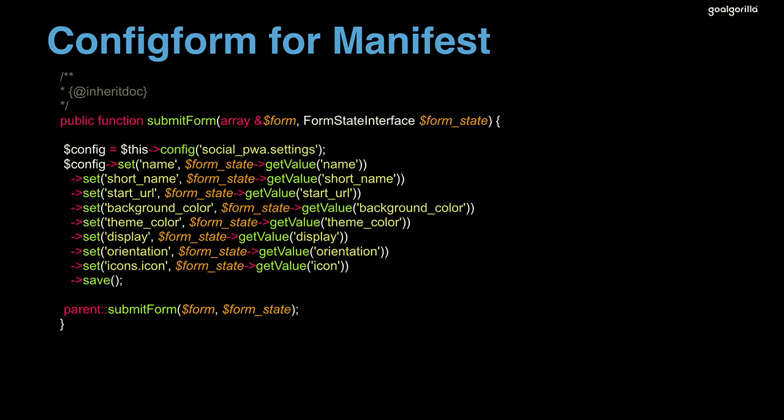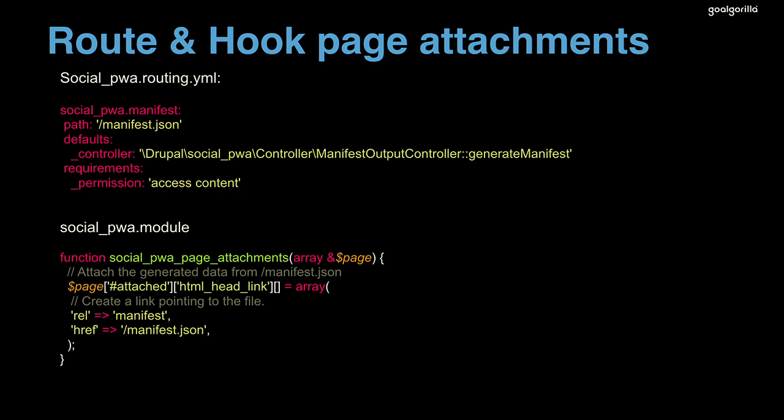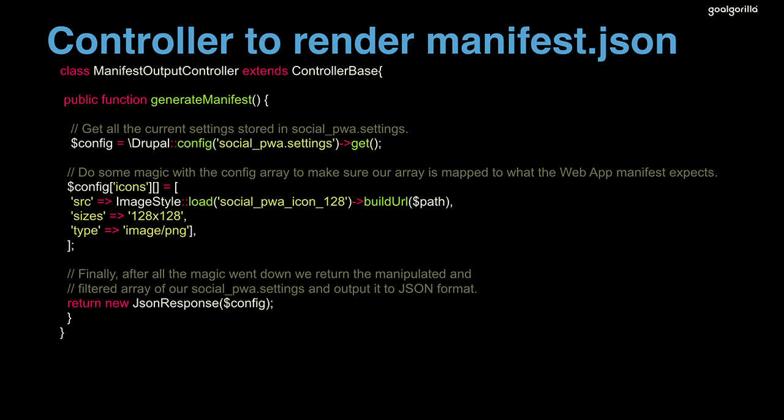Managing it yourself is done through the hook_page_attachments. What we do there is create a link in the HTML head with a rel tag for 'manifest'. That rel tag tells your browser that all your configuration is going to be in that file — in this case we point it to the manifest.json file. Above that, we have a routing.yml where we say that for manifest.json we have a controller. The controller is really simple: it gets your configuration stored through the admin form, maps it correctly to the manifest.json settings, and outputs it as a JSON response. That's everything there is to it.